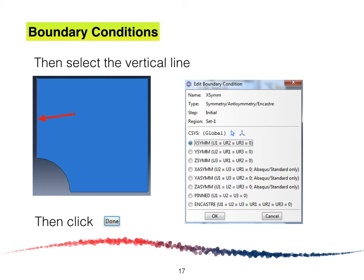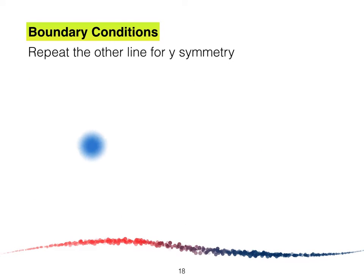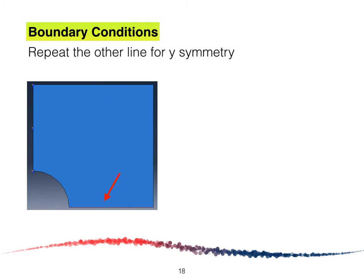The Edit Boundary Condition window will appear. We are going to select X Symmetry. We select X Symmetry because the plate is modeled using symmetry — the plate does not move horizontally but it will move vertically. Therefore we select X Symmetry followed by OK.